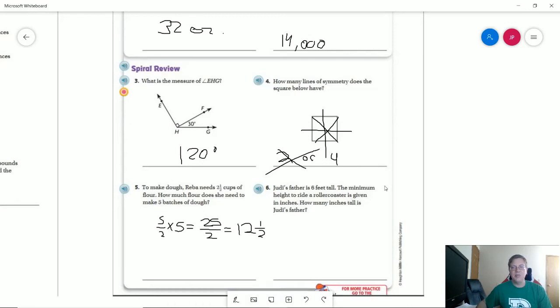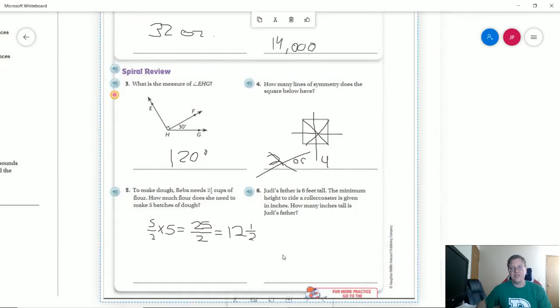And our last problem, Judy's father is 6 feet tall. We can multiply his height in feet by 12 inches to get our answer of 72.